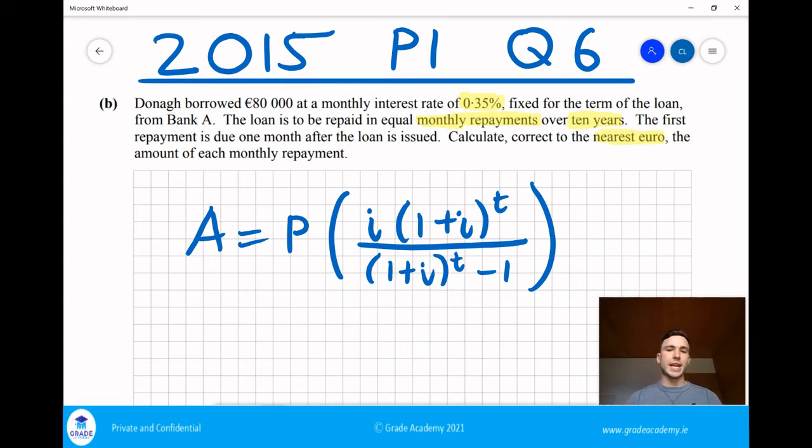We've already done part A in a previous video, so it's nice to finish off the question. Donica borrowed 80,000 euro at a monthly interest rate of 0.35%. The loan is to be repaid in equal monthly repayments over 10 years. The first repayment is due one month after the loan is issued. Calculate correct to the nearest euro the amount of each monthly repayment.